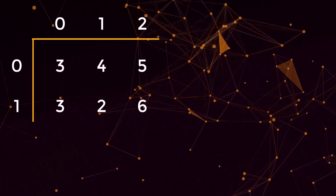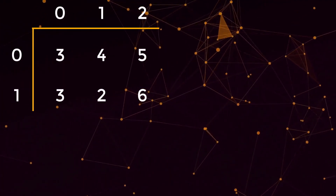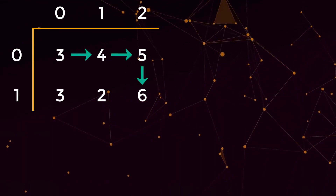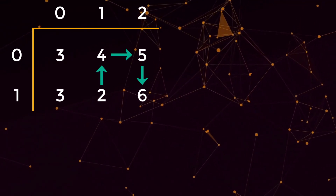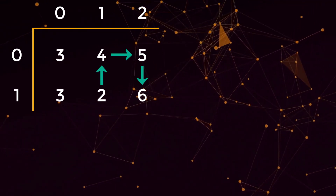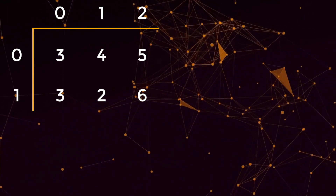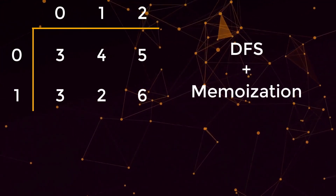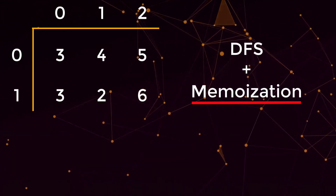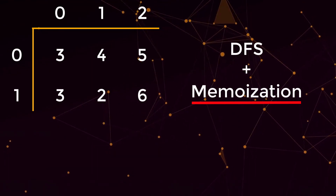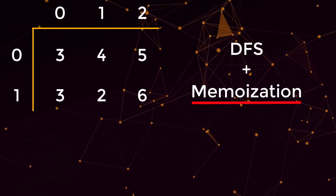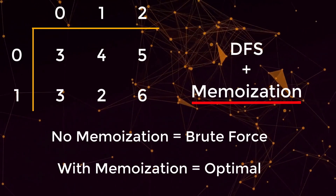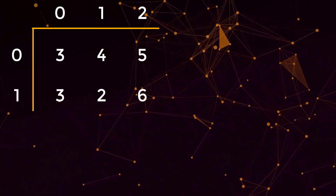So let's go over an example. Let's say we were given the following matrix — we need to find the longest increasing path. In this matrix it could either be 3, 4, 5, 6, or it could be 2, 4, 5, 6. Both of those paths have a length of 4, so we would return 4. We're going to solve this using DFS and memoization. The memoization piece is very critical because without it we'd just have the brute force approach, but with memoization we automatically get the optimal approach.